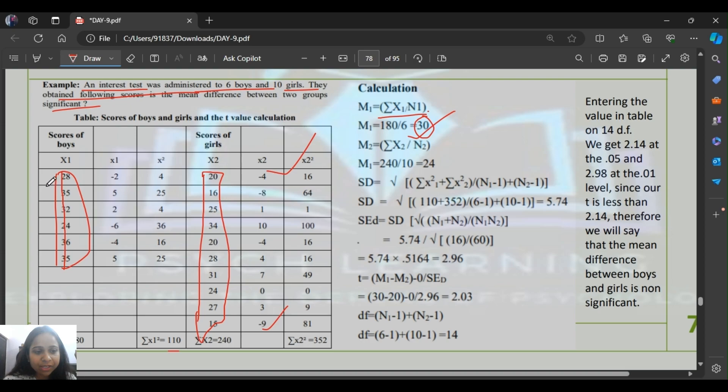Then we subtracted from 30: 28 minus 30 is minus 2, 35 is plus 5, 32 is 2, 24 is minus 6, 36 is 6, 35 is 5. We squared all values and wrote them. Then for mean 2, we added 20 plus 16 plus 25 plus 34 plus 20 plus 21 and divided by 10 because there are 10 girls. We got mean 24.